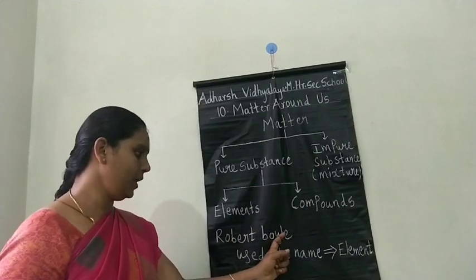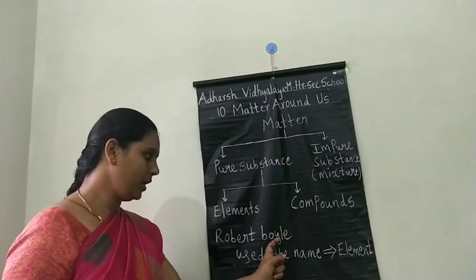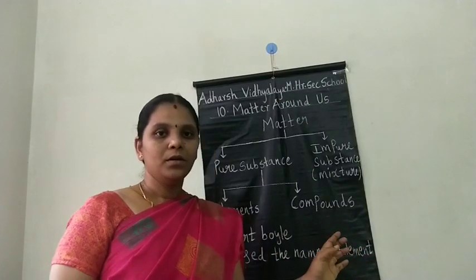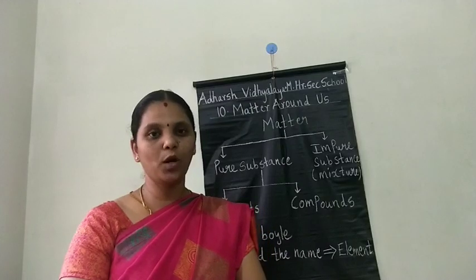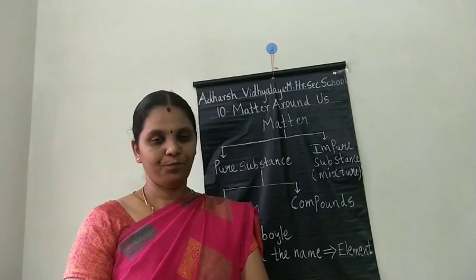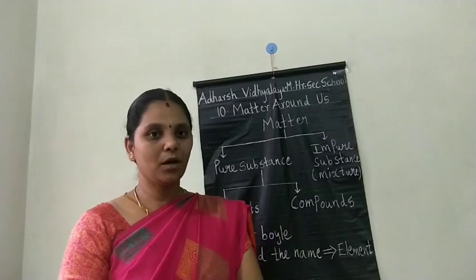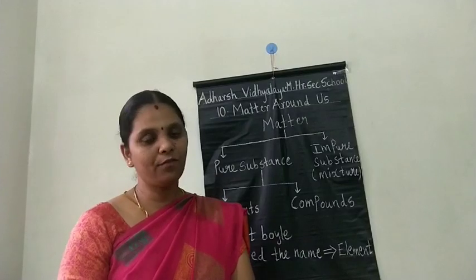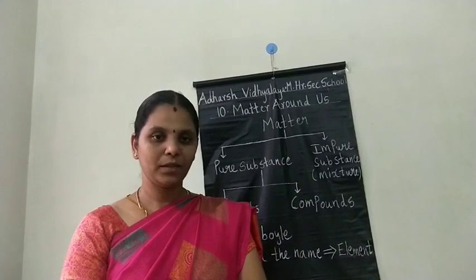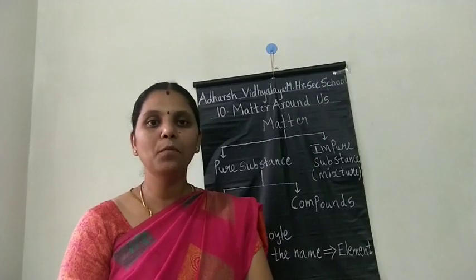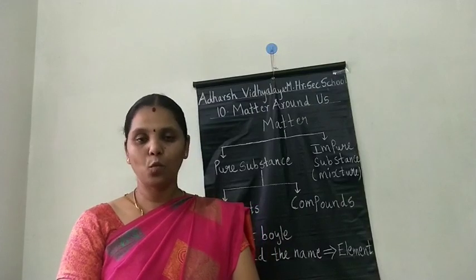The scientist Robert Boyle used the name 'element.' An element is a very small particle that cannot be broken further. Elements are made up of a similar kind, or one kind, of atoms. Elements are the building blocks of all materials.